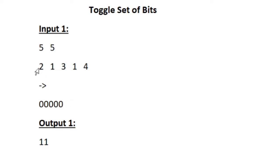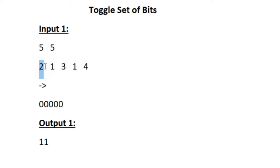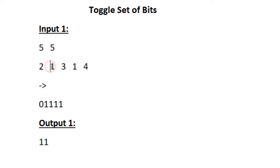Our task is to toggle the bits present in this string using the values of the n integers. The first integer out of the n integers is 2, so we have to toggle all the bits from the second index. Currently the binary string is 5 zeros, so from the second index we toggle all the bits — zeros are updated to 1. If the bit is 0 we change it to 1; if it is 1 we change it to 0. This is toggling.